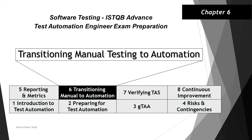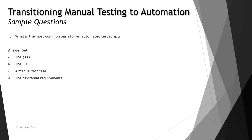Prepare well, as we have four topics and five questions. The very first question: what is the most common basis of an automated test script? We understand that to have automated test scripts, the basis is the manual test cases. Looking at the options: GTAA is the test architecture for automation, which is not the basic component; SUT is a different part altogether.